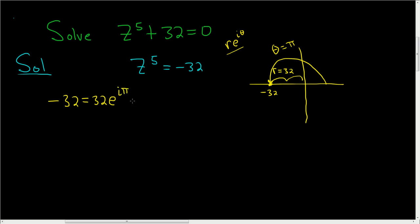But e to the z is a periodic function, so we can write this as 32 e to the i pi plus 2k pi.